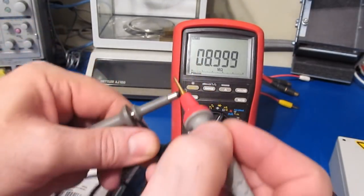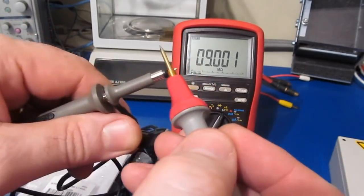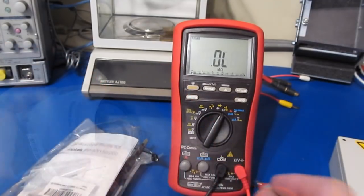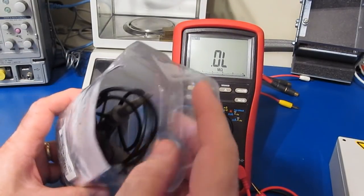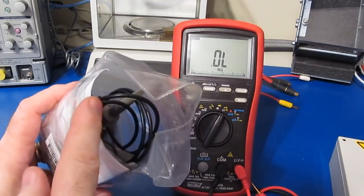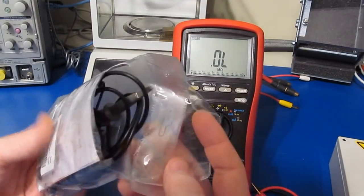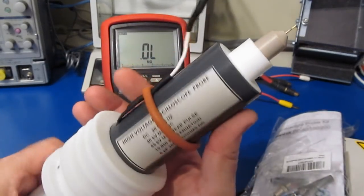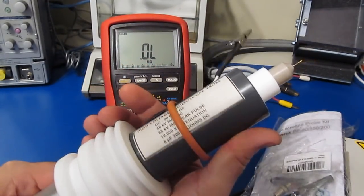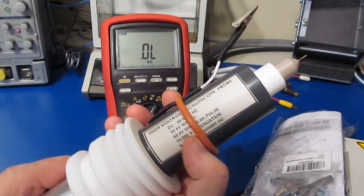Now these probes work with the one megaohm input impedance of the scope, and that combined with the nine megaohms of the probe gives us an input impedance of 10 megaohms. Of course, if you take a probe like this and exceed what its maximum voltage rating is, you're probably not only going to damage your probe but you're probably also going to damage the front end of your oscilloscope.